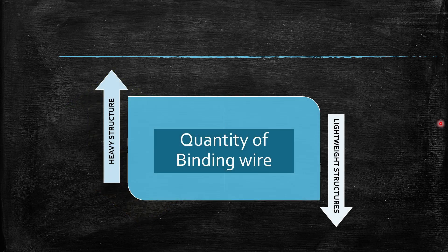Similarly, for heavy structure, we need more quantity of binding wire. Comparatively, for light structure, we need less quantity of binding wire.